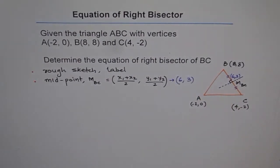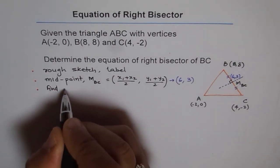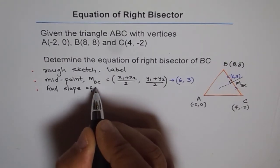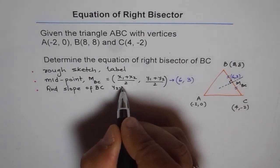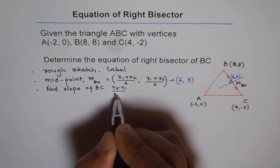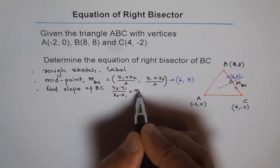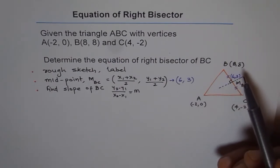Now, next step is find the slope of line BC. So find slope of given line BC. In this case, it is BC. So slope of the line will be, you will use the formula y2 minus y1 over x2 minus x1. Let us call this slope as equal to M. So as we generally write, M is the slope.